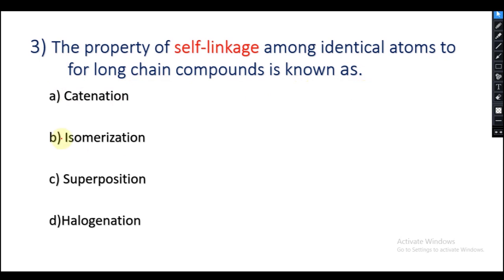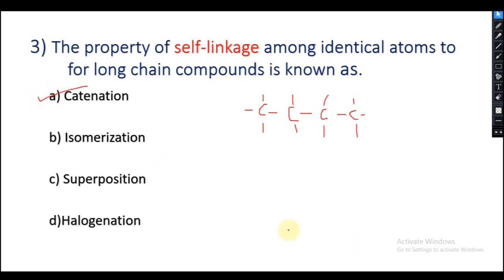Question 3: The property of self-linkage among identical atoms to form long chain compounds is known as — catenation, isomerization, superposition, or halogenation? As we know that carbon has the property of self-linking with carbon atoms to form long chain compounds, and this property is called catenation. So option A is the right answer.